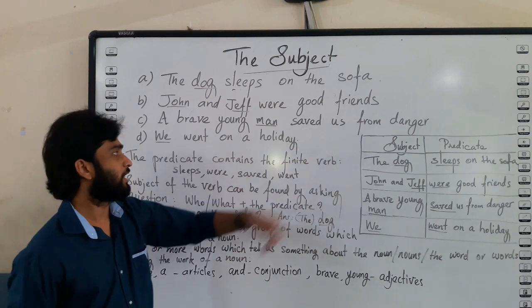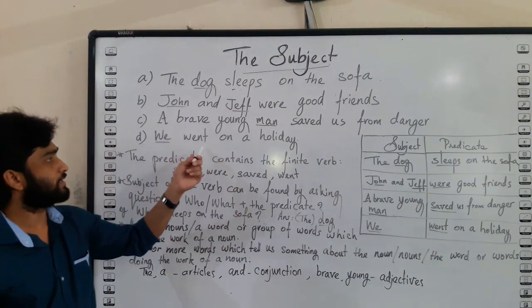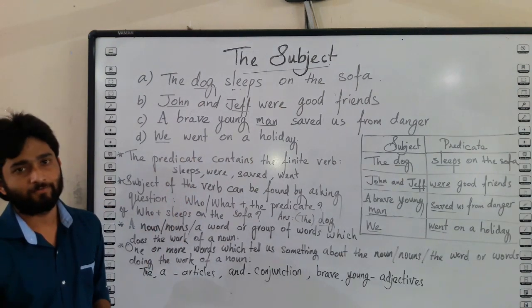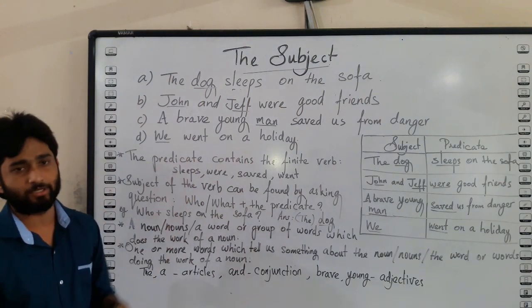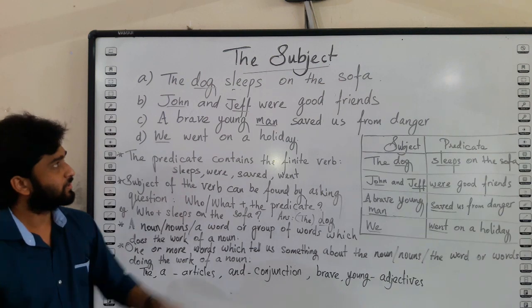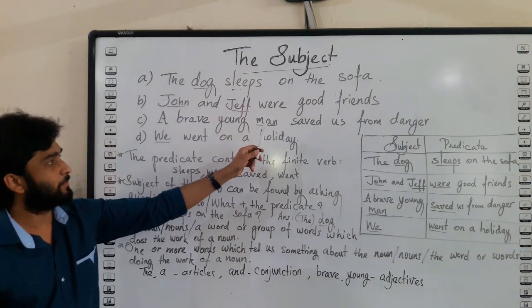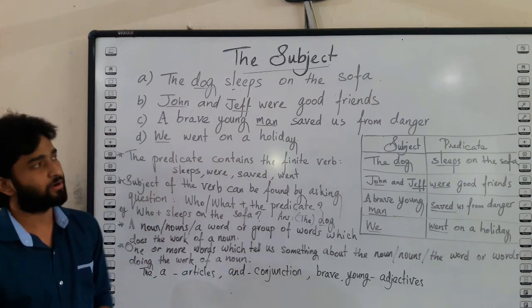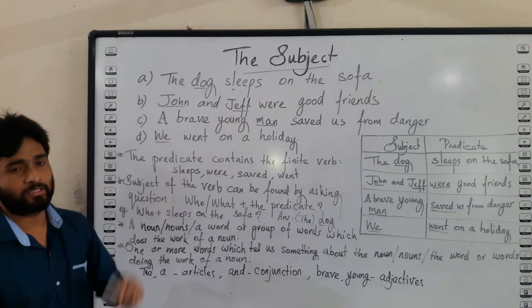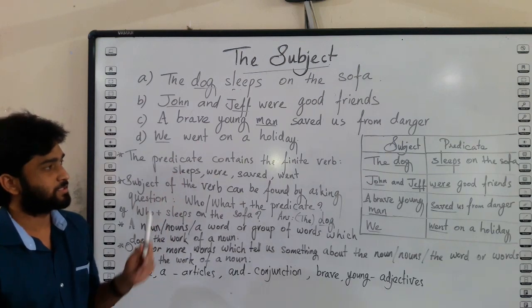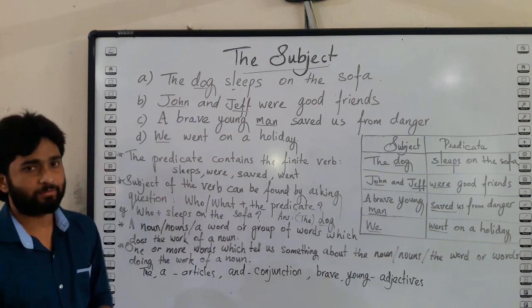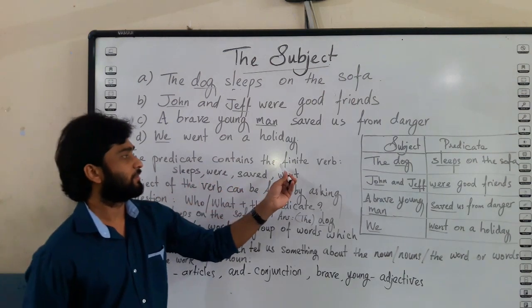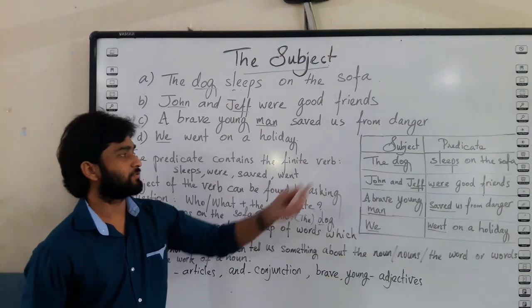That is the verb. And in 'We went on a holiday,' 'went' is the action verb. So — sleeps, were, saved, and went — all these are known as verbs.